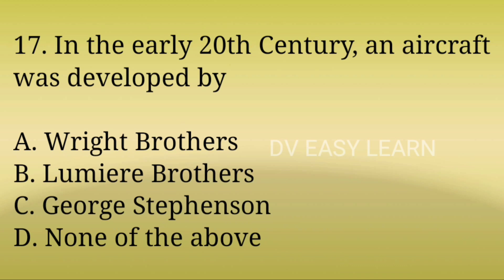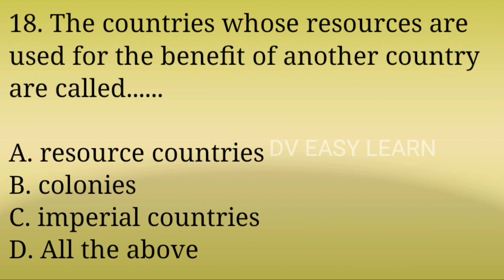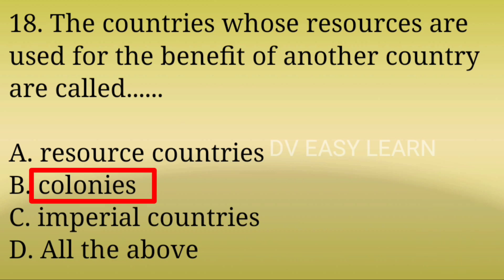17th Question: In the early 20th century, an aircraft was developed by? Correct answer: The Wright Brothers. 18th Question: The countries whose resources are used for the benefit of another country are called? Correct answer: Colonies.